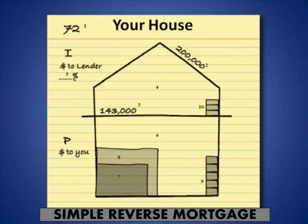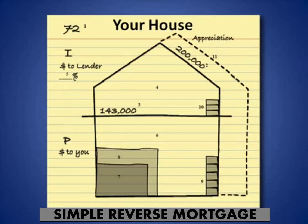Item ten is the interest accruing against any money you've borrowed — reserved for the lender, not paid right now but set aside. If your home appreciated, say that $200,000 home increased in value, there would be more money available for both you and the lender. There's also credit line growth: if you take the credit line, the portion available to you is guaranteed to increase by whatever the current interest rate is.